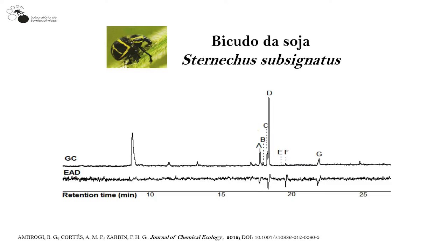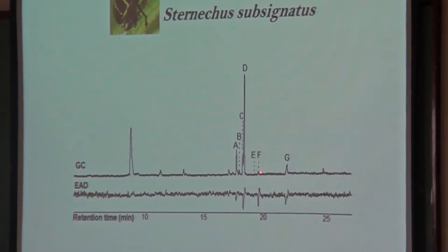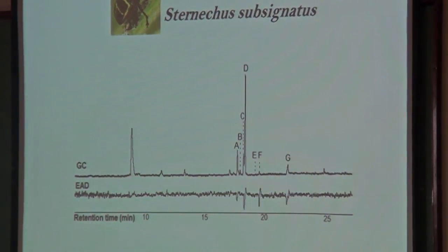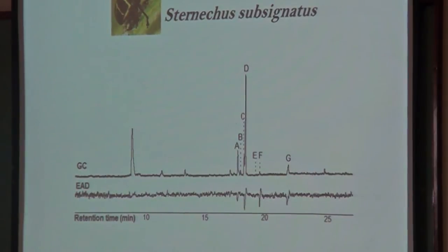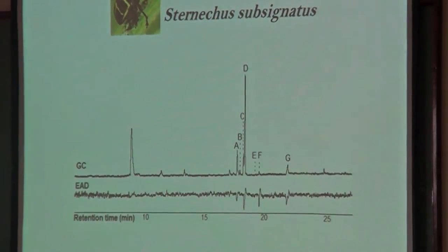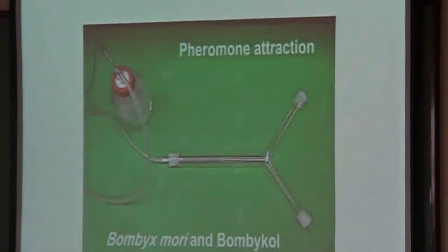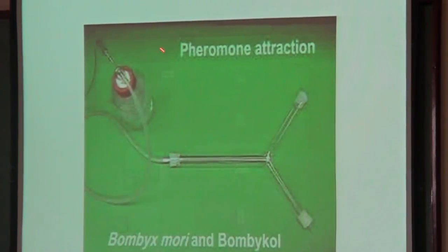Em um trabalho publicado no Journal of Chemical Ecology, a gente vê que dentre todos os compostos presentes no extrato, a antena responde principalmente ao composto A, ao composto D e ao composto F. O composto F estava em quantidade mínima e jamais seria considerado relevante sem o GC-EAD, mas foi o segundo composto mais ativo pela antena. Assim, foca-se a identificação nos compostos que a antena responde — aqueles que apresentam atividade biológica esperada.